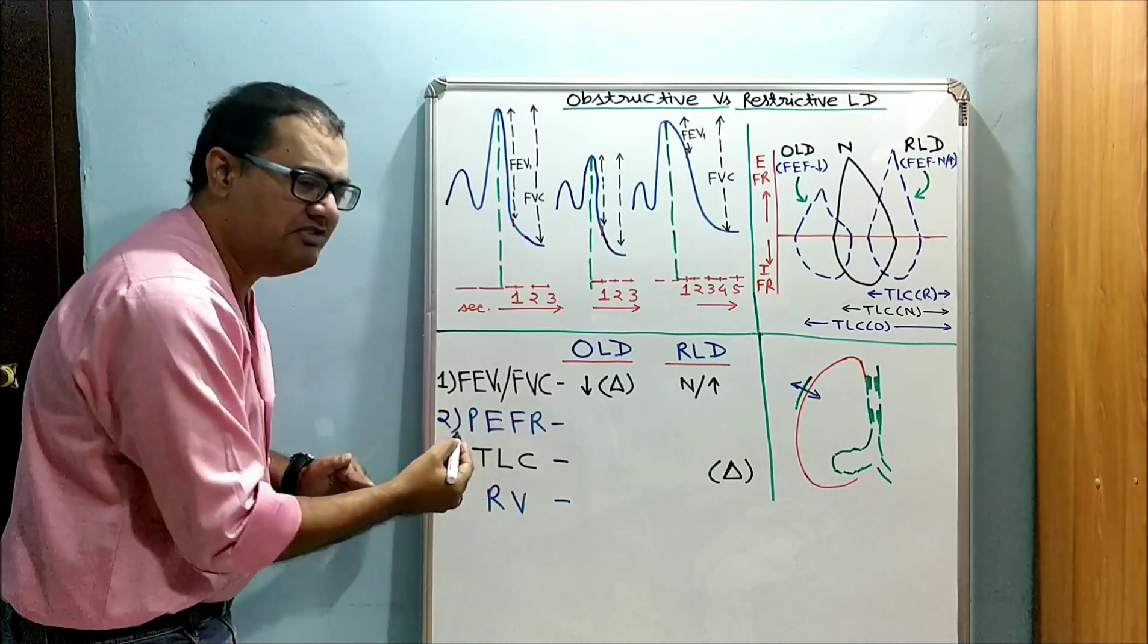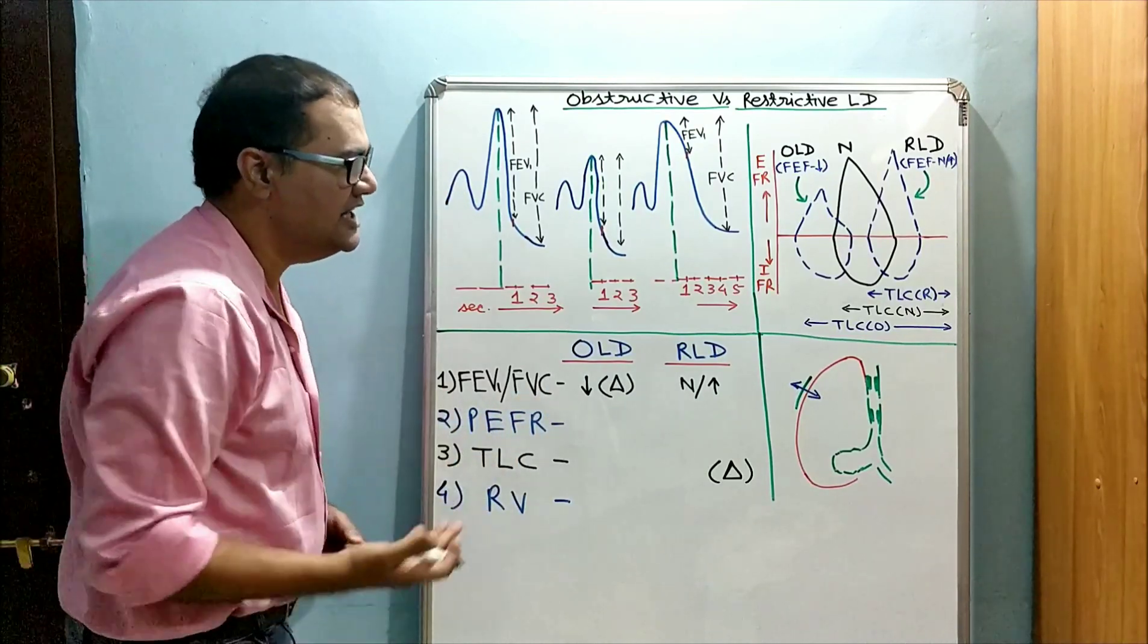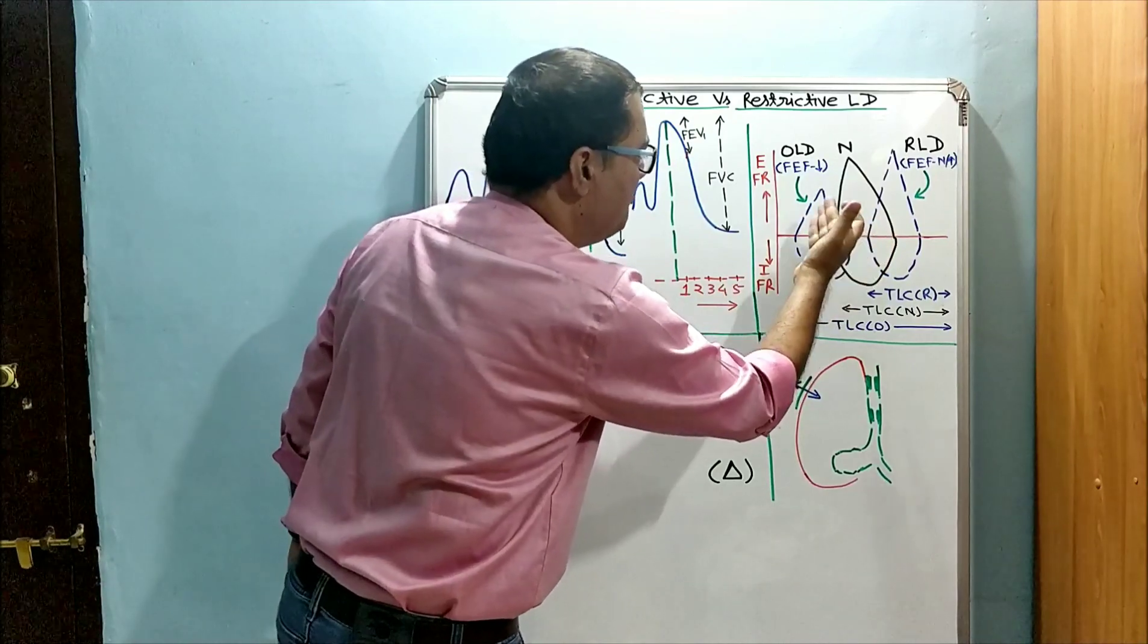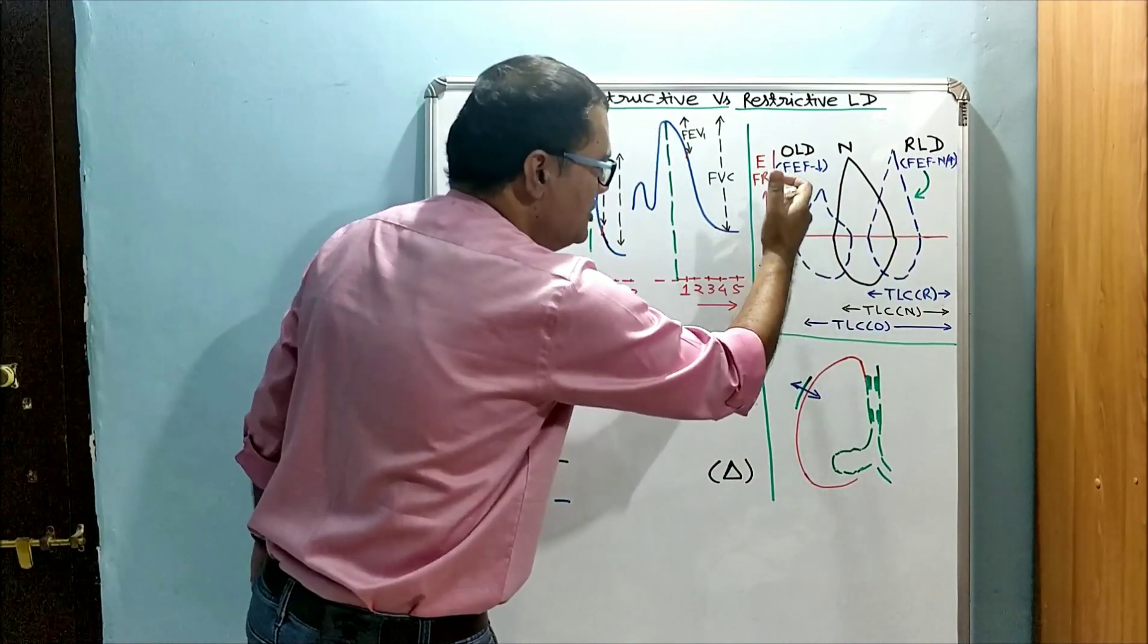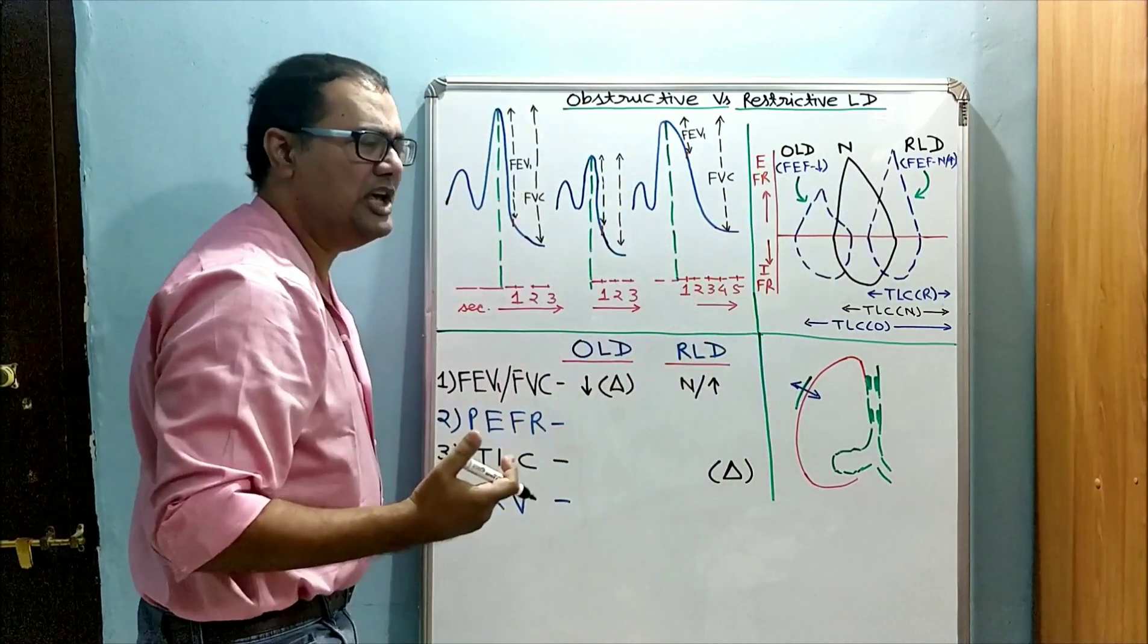Second is different expiratory flow rates, which we can easily measure by flow volume loop. This is maximum flow rate during forced expiration.